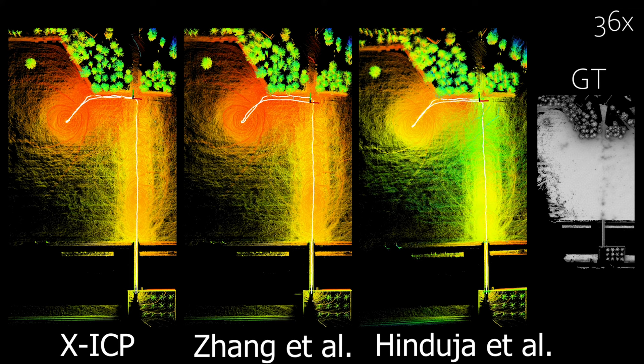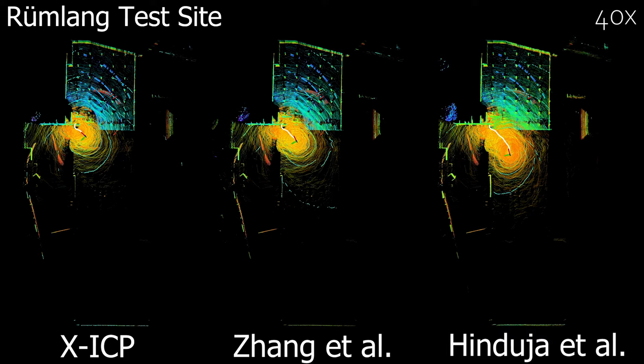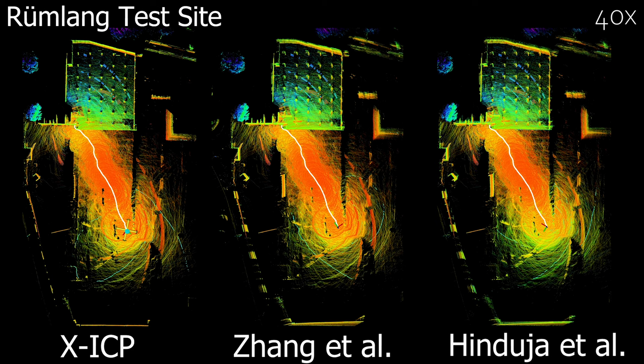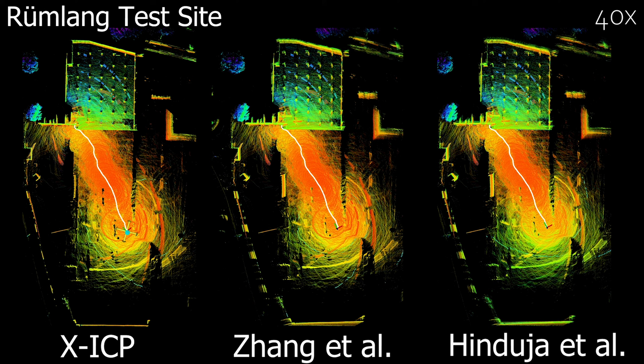In our third experiment, the robustness against multi-directional degeneracy is analyzed. Here, due to multi-directional degeneracy, one of the state-of-the-art methods' pose estimation heavily drifted.